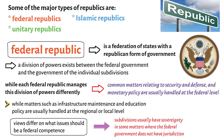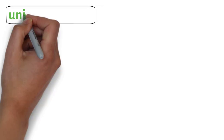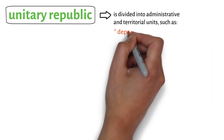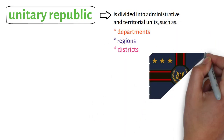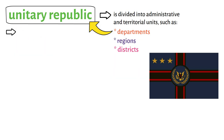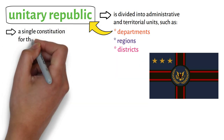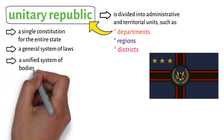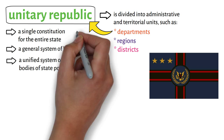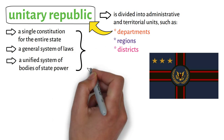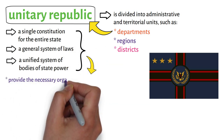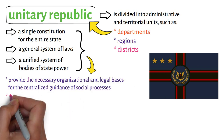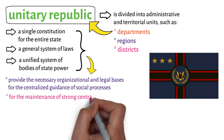In contrast to a federal republic, a unitary republic is divided into administrative and territorial units, such as departments, regions, and districts. The unitary republic has a single constitution for the entire state, a general system of laws, and a unified system of bodies of state power. These attributes of the unitary republic provide the necessary organisational and legal bases for the centralised guidance of social processes and for the maintenance of strong central authority in the state.